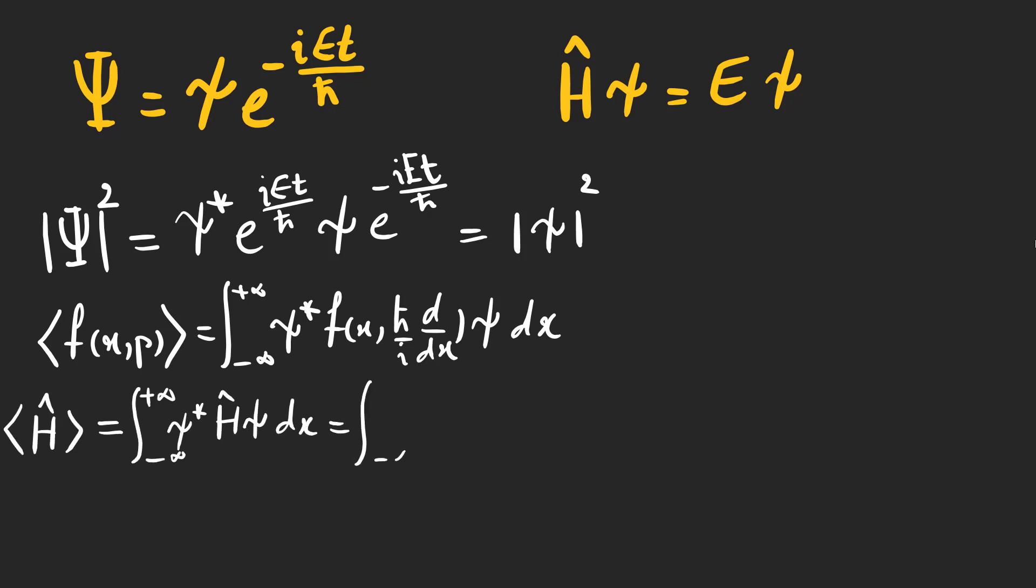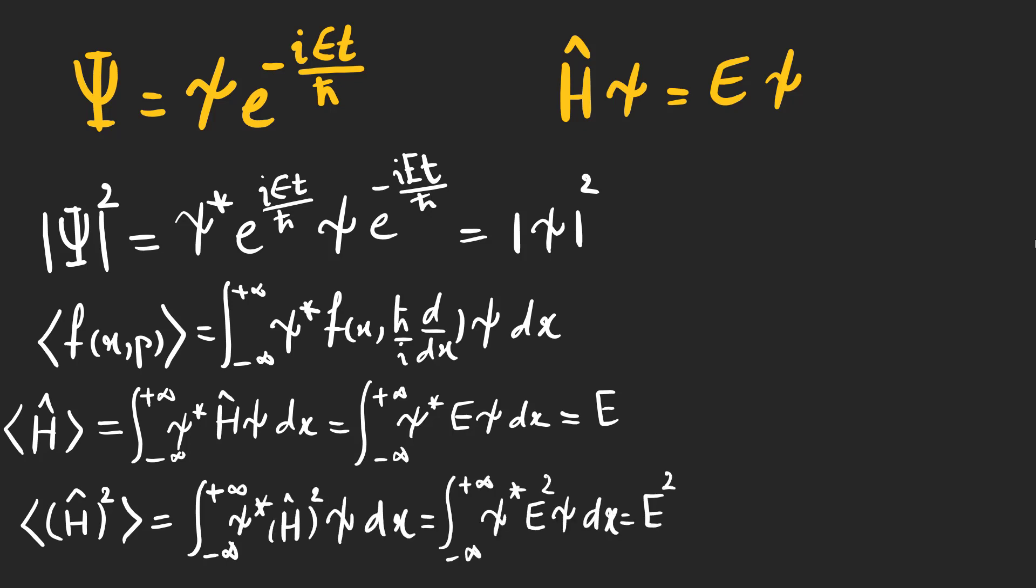The expectation value of the Hamiltonian is E. And the expectation value of h squared is E squared. So the variance yields zero and its distribution has zero spread.